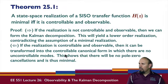So that's the important thing. If the realization is not controllable and observable, then we can form the Kalman decomposition. This will yield a lower order realization, contradicting the assumption that we have a minimal realization. A minimal realization is a realization that is as small as possible.